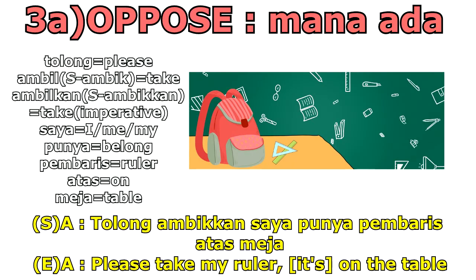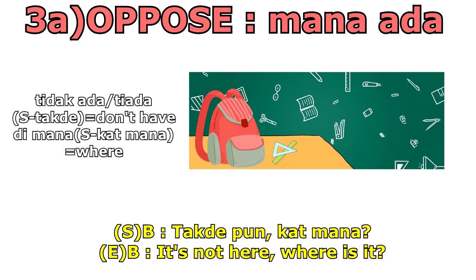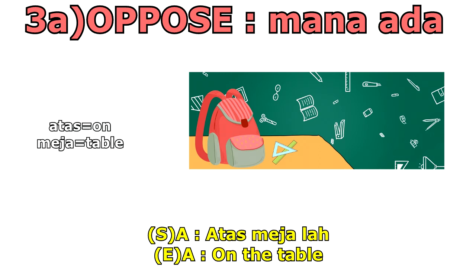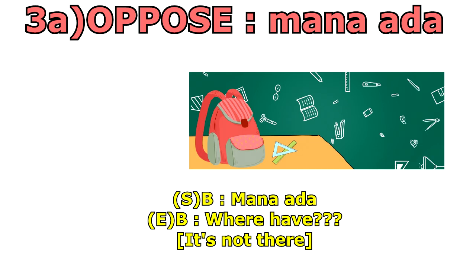The last situation where you can use "mana ada" is when you want to object or oppose. For example, somebody asks you to "tolong ambilkan saya punya pembaris atas meja" — please take my ruler on the table. You say "tak ada pun kat mana?" meaning it's not here. That person insists "atas meja lah" (on the table), and you object: "mana ada" — no, it's not there.